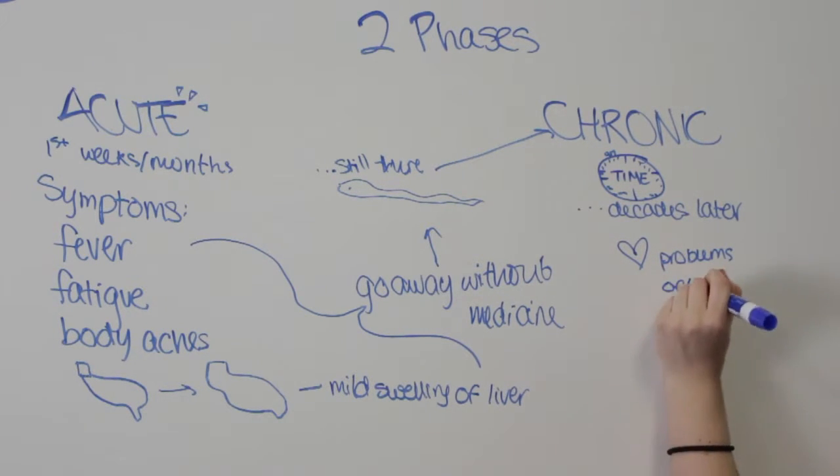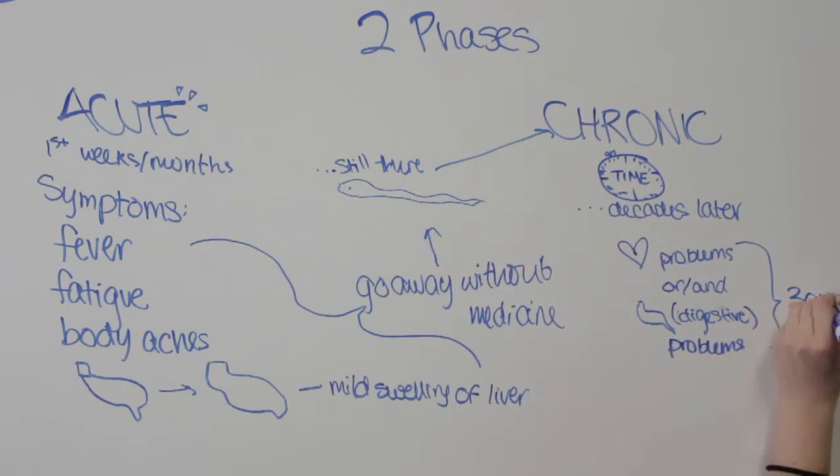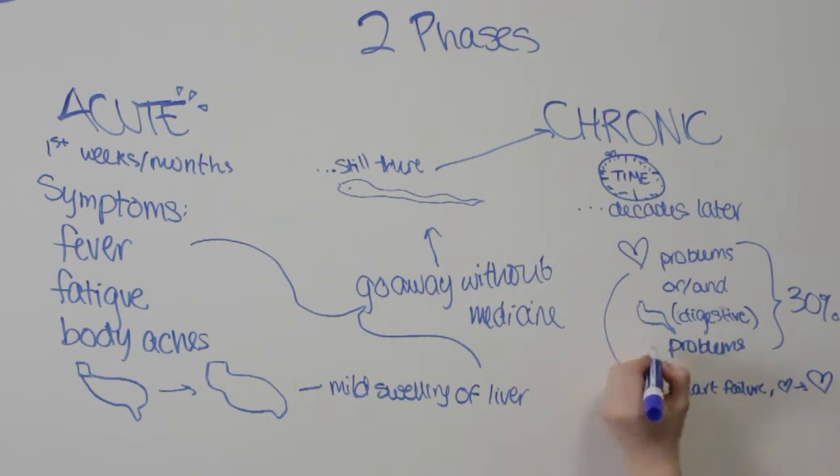In the chronic phase, on average, there is a 30% chance of more serious complications developing, such as congestive heart failure, an enlarged heart, an altered heart rate or rhythm, cardiac arrest, or an enlarged esophagus or colon.